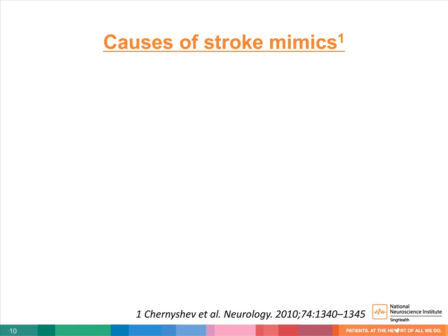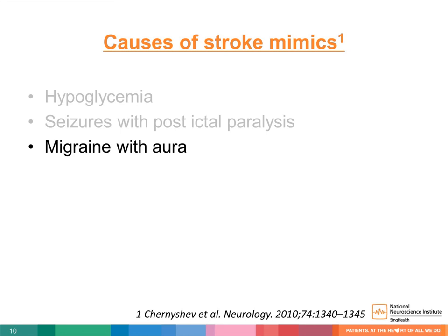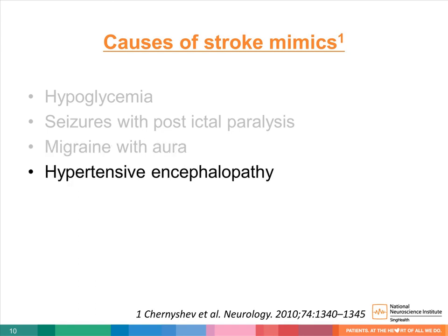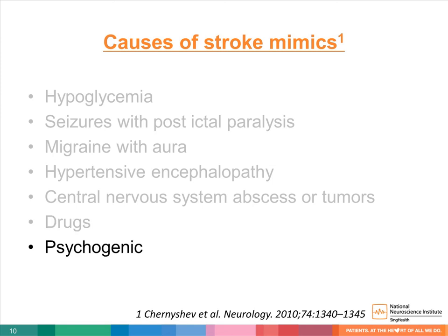There are many causes of stroke mimics. One of the most common medical causes is hypoglycemia. Due to the high prevalence of diabetic patients on oral hypoglycemic agents, screening for hypoglycemia is critical in patients presenting with acute neurological deficits. Patients with seizures and post-ictal paralysis may also present with weakness resembling a stroke. Patients with migraine with aura can present with sudden onset weakness during or after the migraine. Other rarer causes include hypertensive encephalopathy, CNS abscesses or tumors, and drug toxicity causing acute weakness or numbness. A subgroup of patients can present with stroke-like symptoms that are psychogenic in origin.